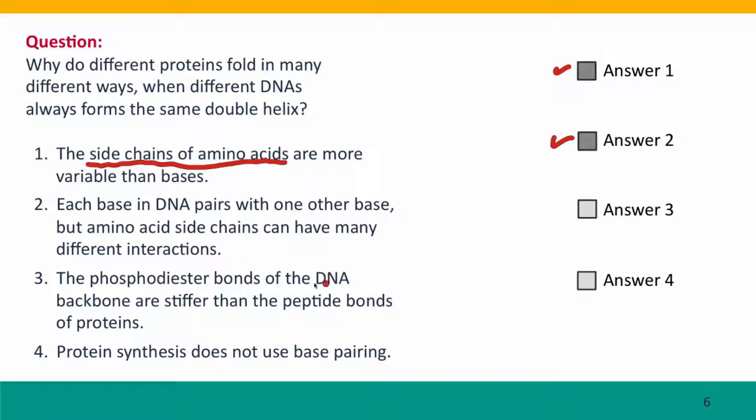Now, the phosphodiester bonds of DNA aren't actually stiffer than peptide bonds, although when they're twisted up into a double helix, they are stiffer. And protein synthesis, you should remember from Module 1, does use base pairing. It's the base pairing between the transfer RNA and the messenger RNA codons that actually puts the right amino acids in the right order in the protein.